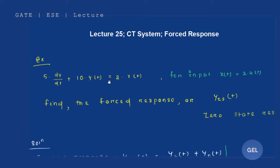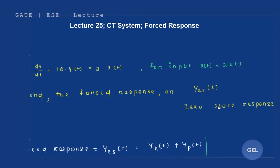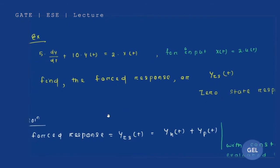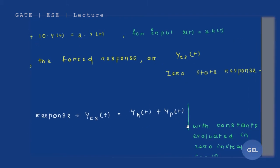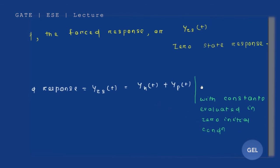Let's take this example: 5 · dy/dt + 10·y(t) = 2·x(t), where input x(t) = 2·u(t). We need to find the forced response, which is the zero state response y_zs(t). The zero state response is the sum of the homogeneous solution and particular solution, but with constants evaluated at zero initial conditions.